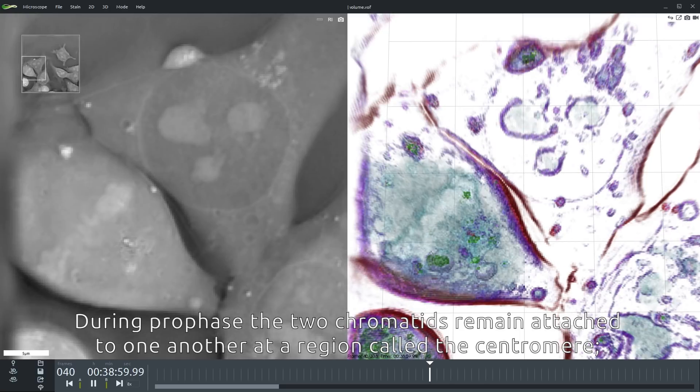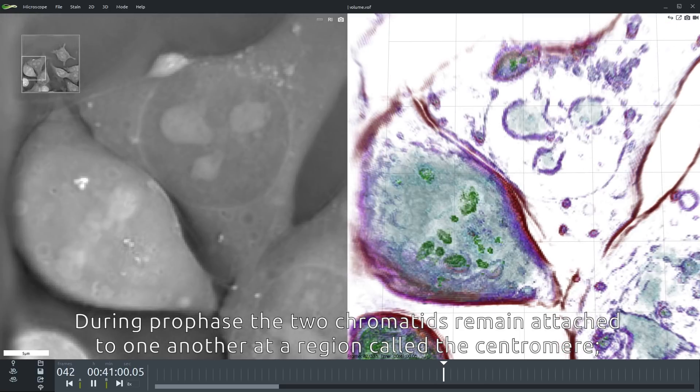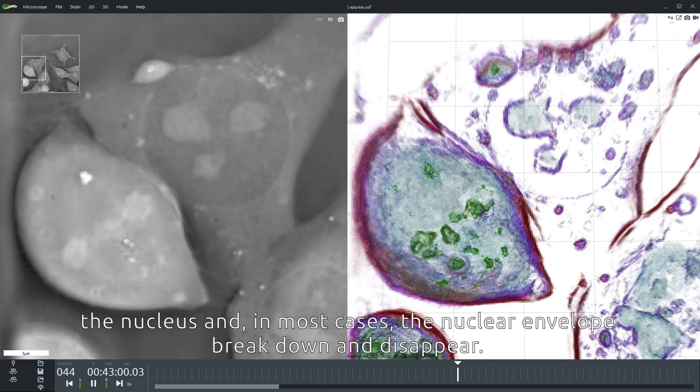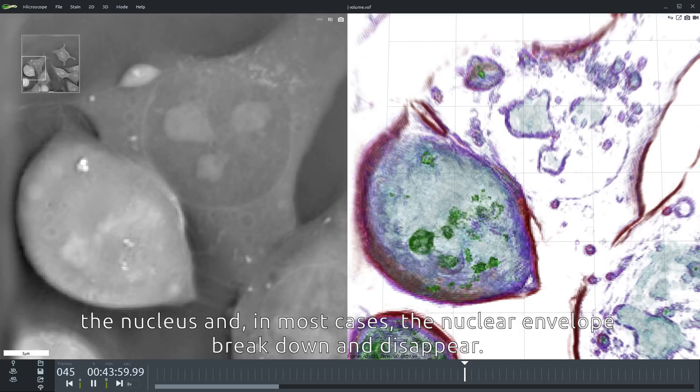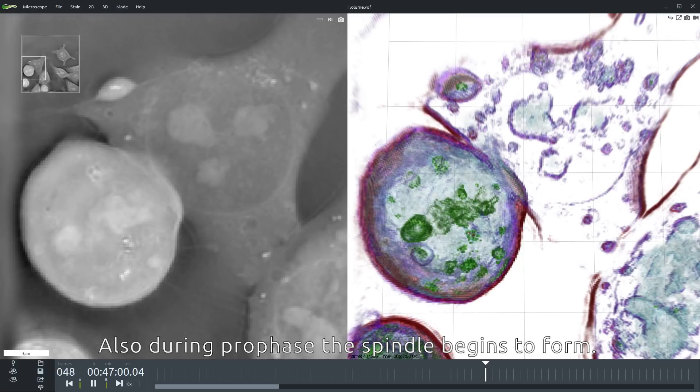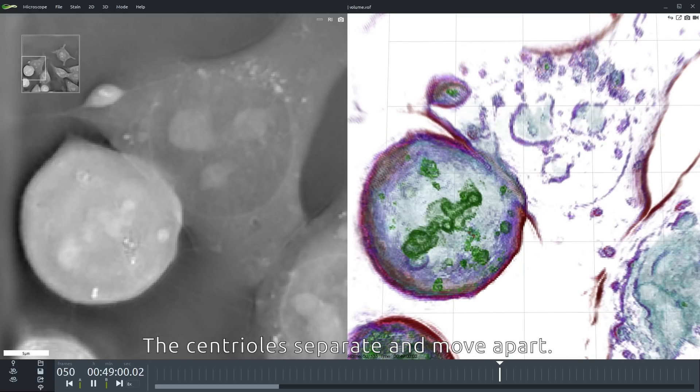During prophase the two chromatids remain attached to one another at a region called the centromere. The nucleus and in most cases the nuclear envelopes break down and disappear. Also during prophase the spindle begins to form. The centrioles separate and move apart.